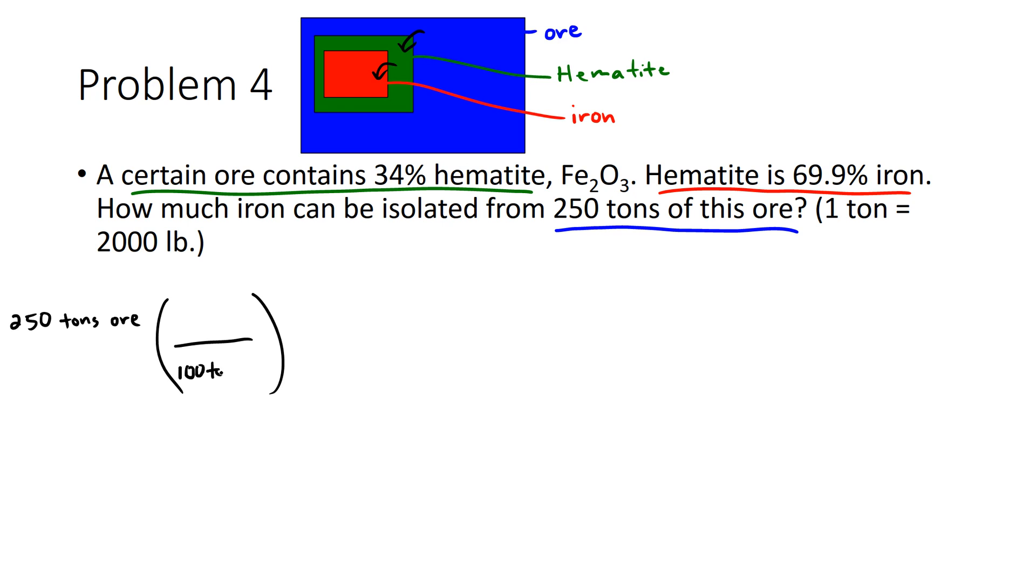So if we have 100 tons of the ore, then we have 34 tons of hematite. And so we'll do this calculation right here. When we divide the 250 tons of ore by the 100 tons of ore, our answer will be left in tons of hematite.